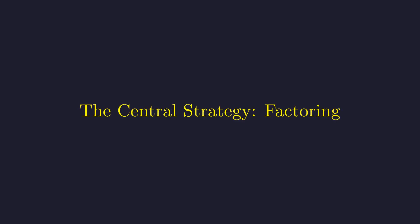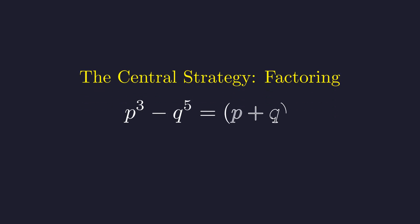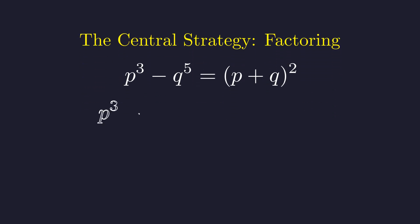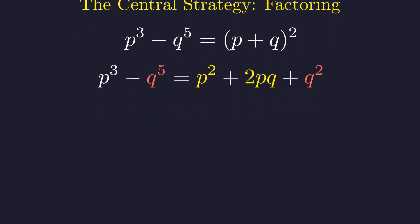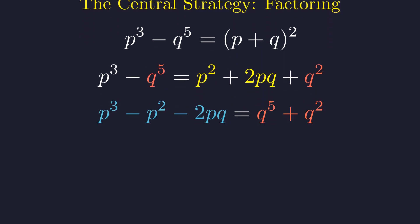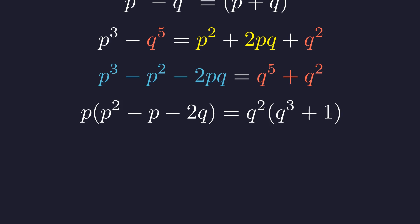The next step is to rearrange the equation into a form that is suitable for a divisibility analysis. We begin again with the original equation. First, we expand the square of the quantity p plus q on the right-hand side. We will rearrange the equation by grouping all terms containing p on the left side and all terms containing q on the right side. Factoring p from the left side and q squared from the right side yields this key equation, which is central to the divisibility argument that follows.